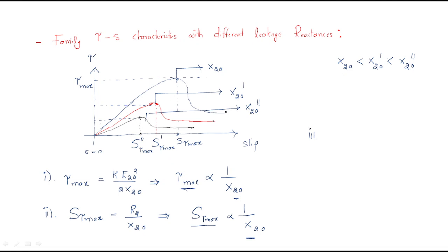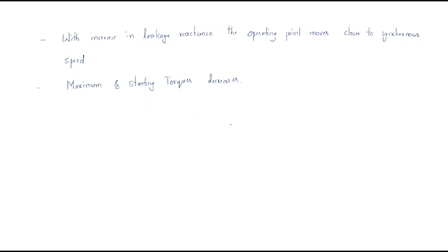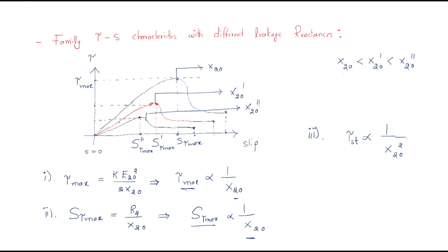What about starting torque? The starting torque is inversely proportional to X2 squared. So as leakage reactance increases, the starting torque also decreases. With increasing leakage reactances, the operating point moves closer to synchronous speed. The linear region becomes less, and the operating point shifts toward synchronous speed.